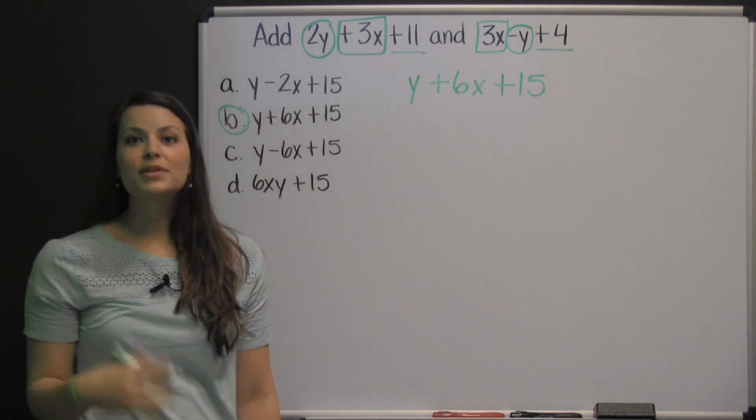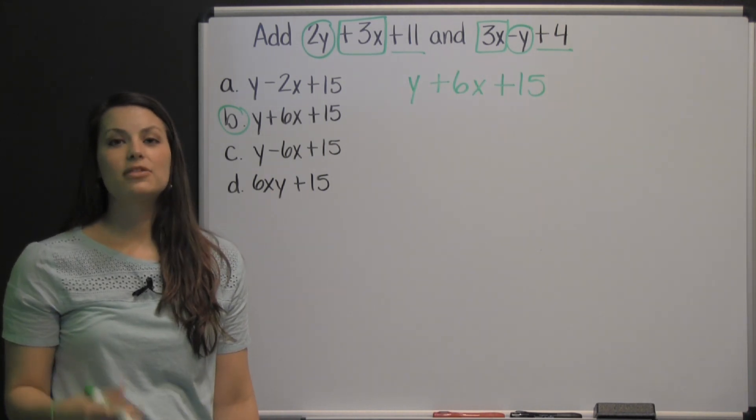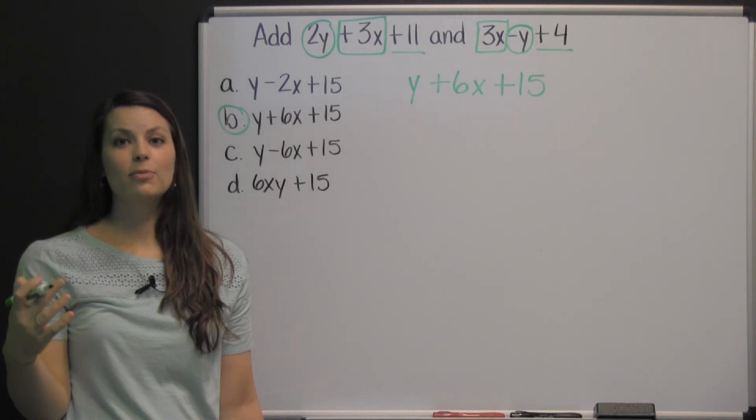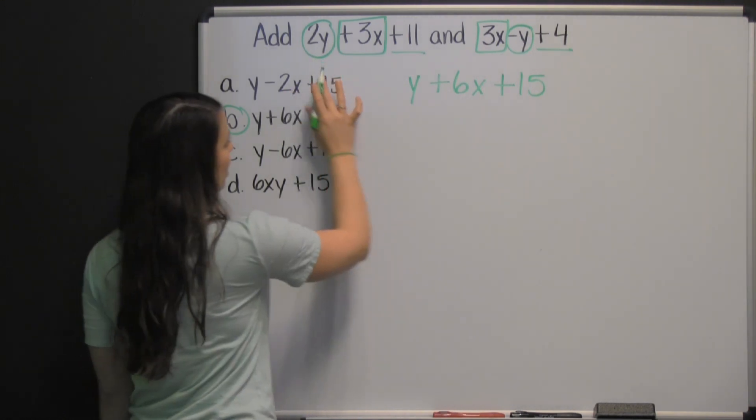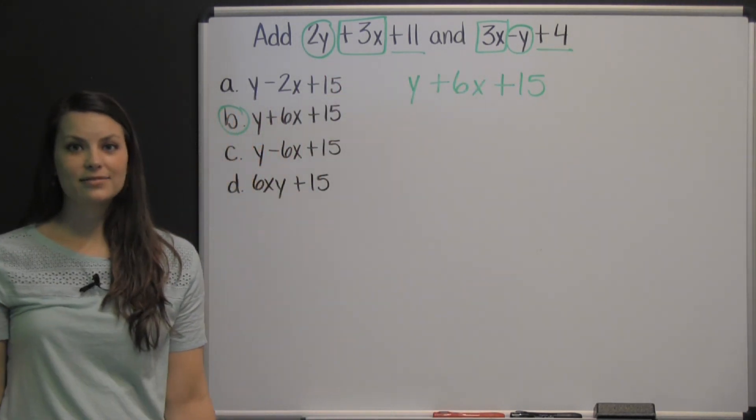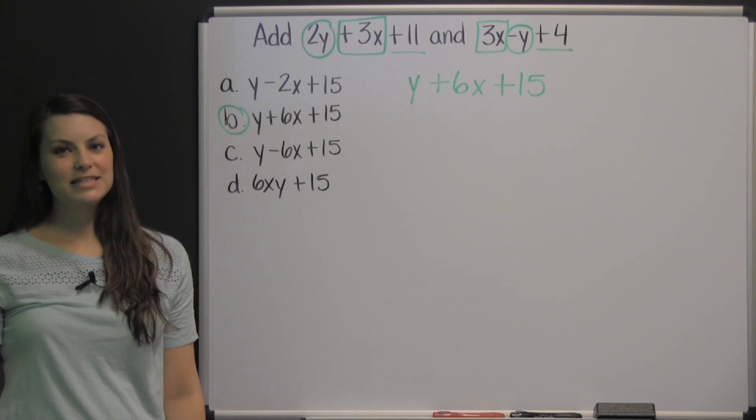Keep in mind you can only add like terms, and like terms mean that their variable terms are exactly the same, or their variable factors are exactly the same. Like 2y and negative y, the variable factor is y and it's exactly the same. Good luck on your HSPT test.